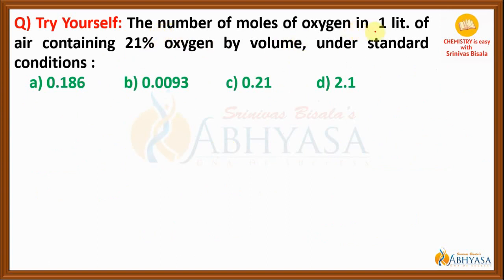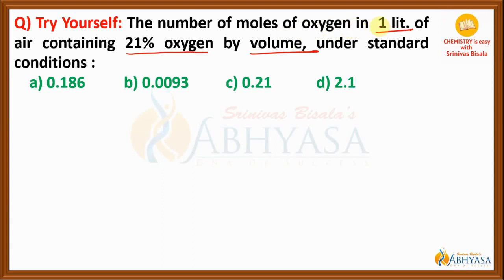Now it is time for you to solve one more numerical. The number of moles of oxygen present in one liter of air containing 21% oxygen by volume. Here it is given by volume. One liter of air contains 21% of oxygen by volume under standard conditions. From this information, calculate the number of moles of oxygen present in one liter. Remember, you are not calculating the number of moles of air — you are calculating the number of moles of oxygen in the given sample of air. You can solve it very easily. Put the answer in the comment box and wait for the next video.